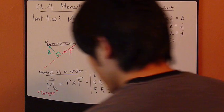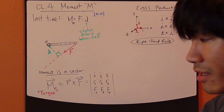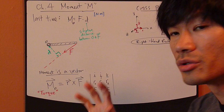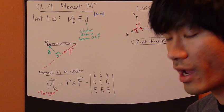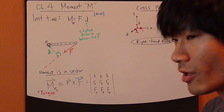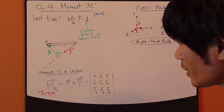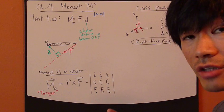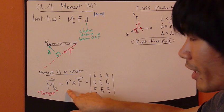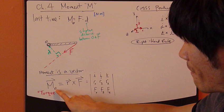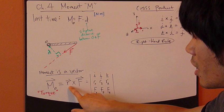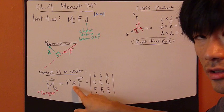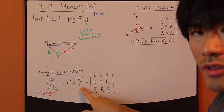Now, moment, in reality, is a vector. So we can talk about the scalar, the magnitude of the moment. The moment also has direction. So the actual full definition of moment is this: the moment vector about point O is equal to R vector, the position vector, cross with the force vector. Now, this is a cross product.